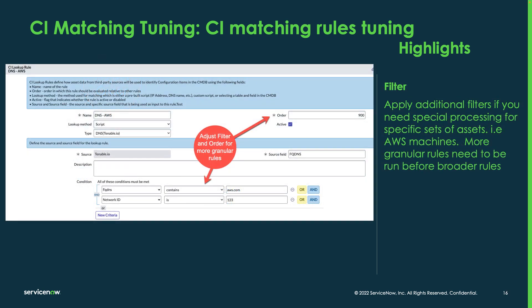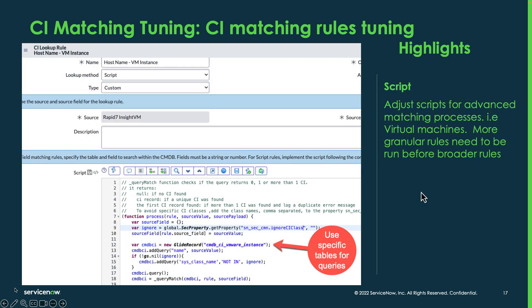You can also adjust the filter conditions on your rules if you need to make something more granular or more targeted when looking for your CIs. Also, when using a script-based CI matching rule and you need more complex logic to determine a CI match — for example, if you need to target specific tables or attributes used within the query — you can see here we're only looking in VMware instance, and in this case looking for things that are not in the ignore property.